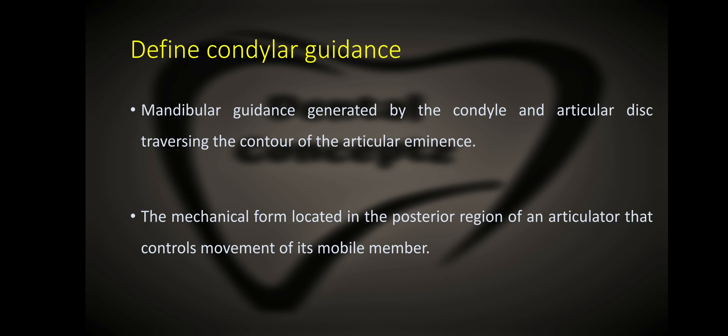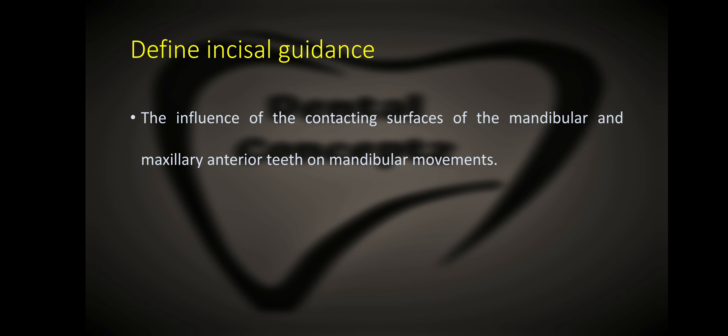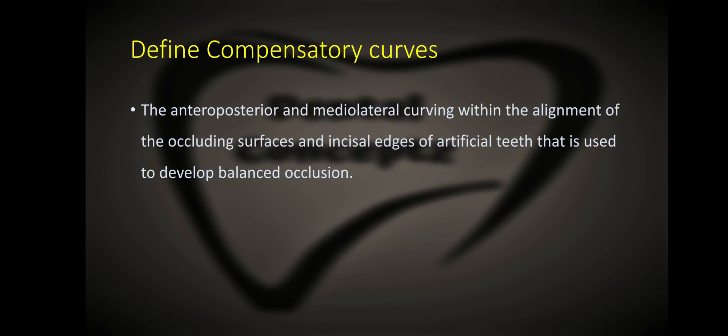What is condylar guidance? Condylar guidance is the mandibular guidance generated by the condyle and articular disc traversing the contour of the articular eminence, or the mechanical form located in the posterior region of an articulator that controls movement of its mobile member. What is incisal guidance? Incisal guidance is the influence of the contacting surfaces of the mandibular and maxillary anterior teeth on mandibular movements. What is compensating curve? It is the anteroposterior and mediolateral curving within the alignment of the occluding surfaces and incisal edges of artificial teeth used to develop balanced occlusion.